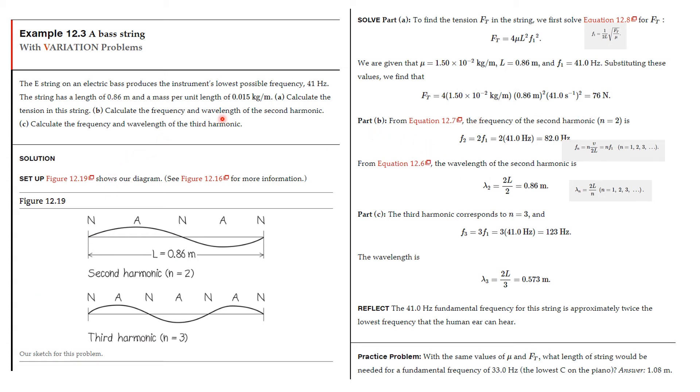In part B, we find the frequency and wavelength of the second harmonic. F sub n equals nV over 2L, which is n times F1. For the second harmonic, that's 2 times F1, which was 41 hertz, so 2 times 41 is 82 hertz. The wavelength is lambda_n equals 2L over n, so 2L over 2 is 1, giving us the wavelength and frequency for the second harmonic. The third harmonic is likewise using those equations with 3 instead, so we get these answers. Here's a problem for you to practice.